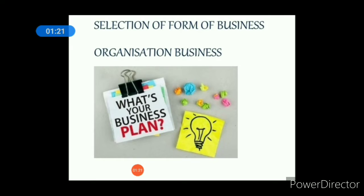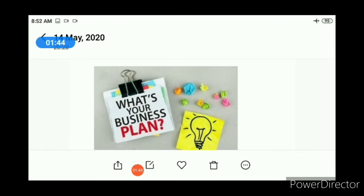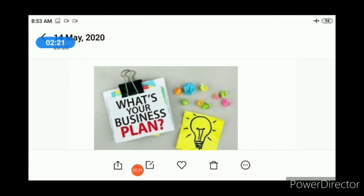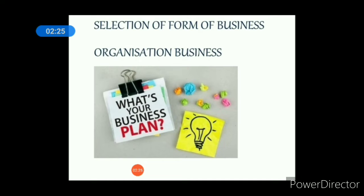अब सभी concepts को study करने के बाद, अगर आपको कहा जाए कि आप एक best form of business organization का selection कीजिए, तो उस time पर आप अपने mind में कौन कौन से factors रखोगे — किसके behalf पर हम sole trade को select करें, किसके behalf पर हम company business को select करें। हर business organization के अपने merits और demerits हैं, इसलिए एक business organization को select करना कोई easy task नहीं है। एक बार जो business organization आपने select कर ली, वो बहुत लंबे time तक आपको follow करना है। अब हम उन factors के बारे में study करने जा रहे हैं।